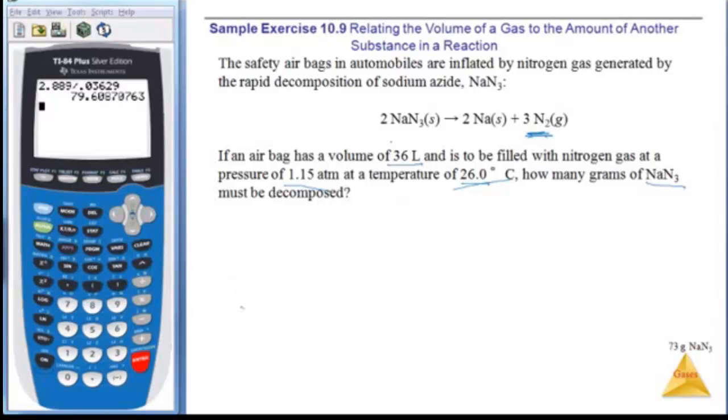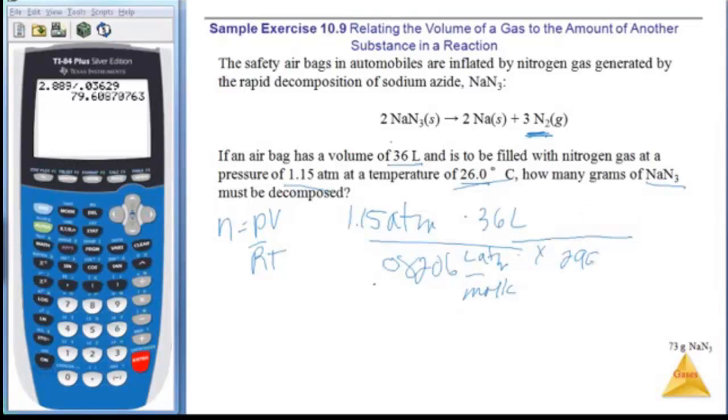Okay, so I have, let's figure out, N equals PV over RT to get the moles of nitrogen gas. My pressure is 1.15 atm. My volume is 36 liters. I'm going to put that over 0.08206 liters atm over moles K. Times 26 C, which is 299 K. Okay, my units will all cancel.